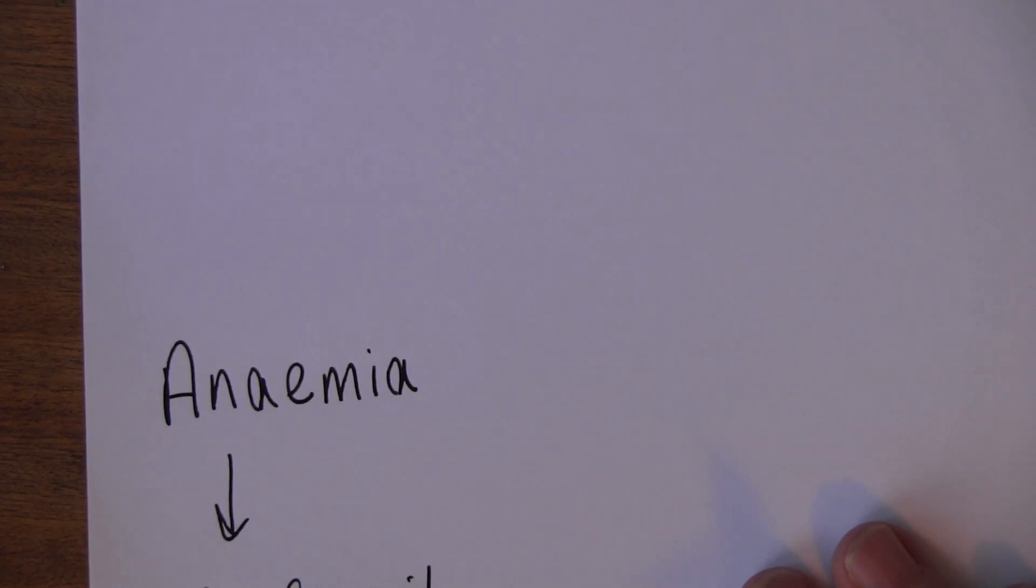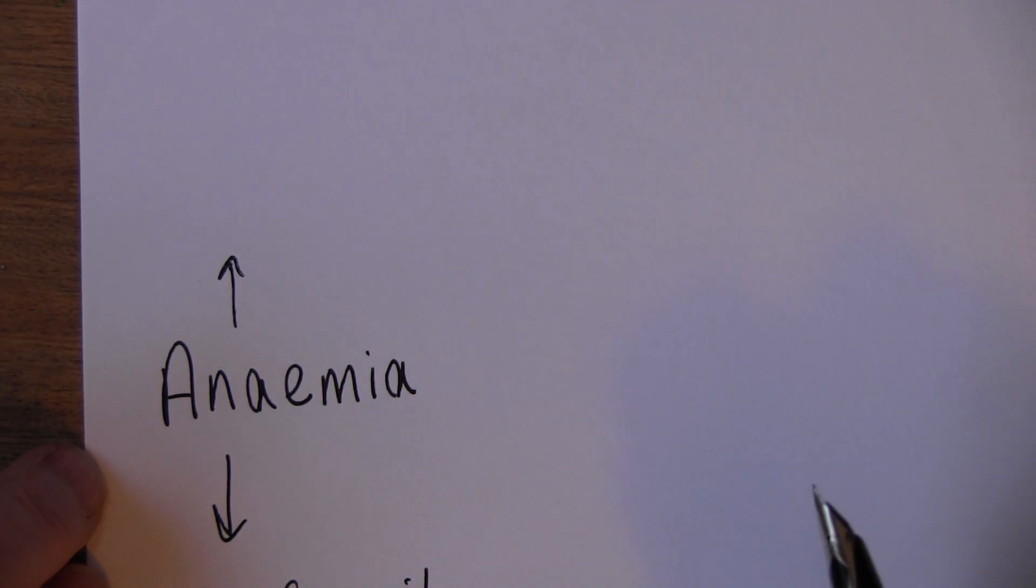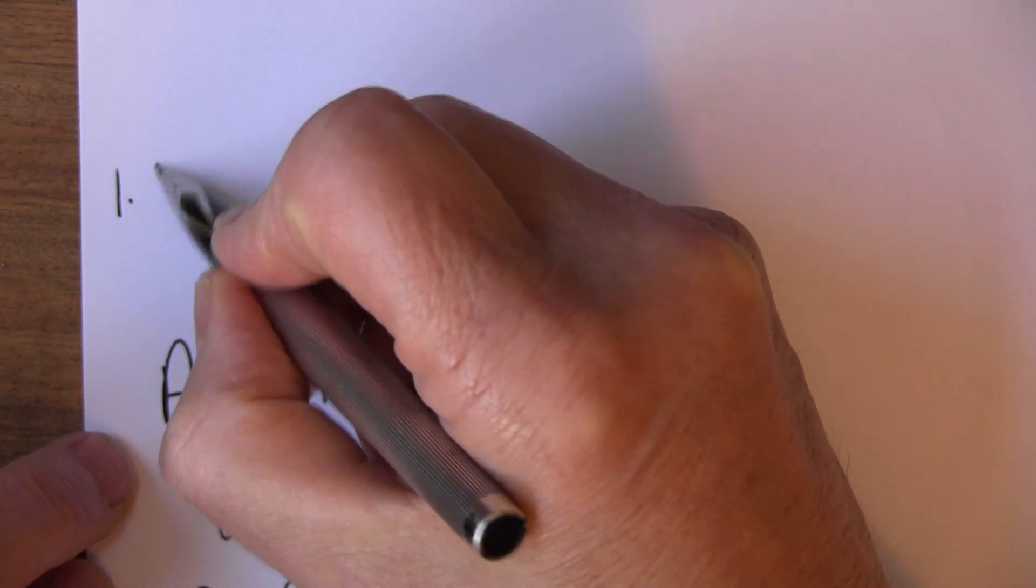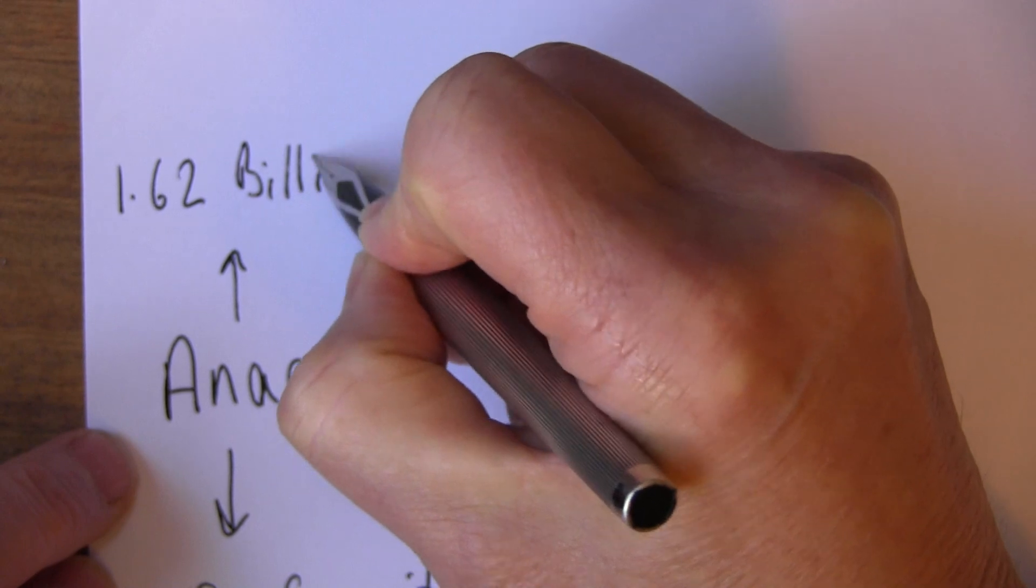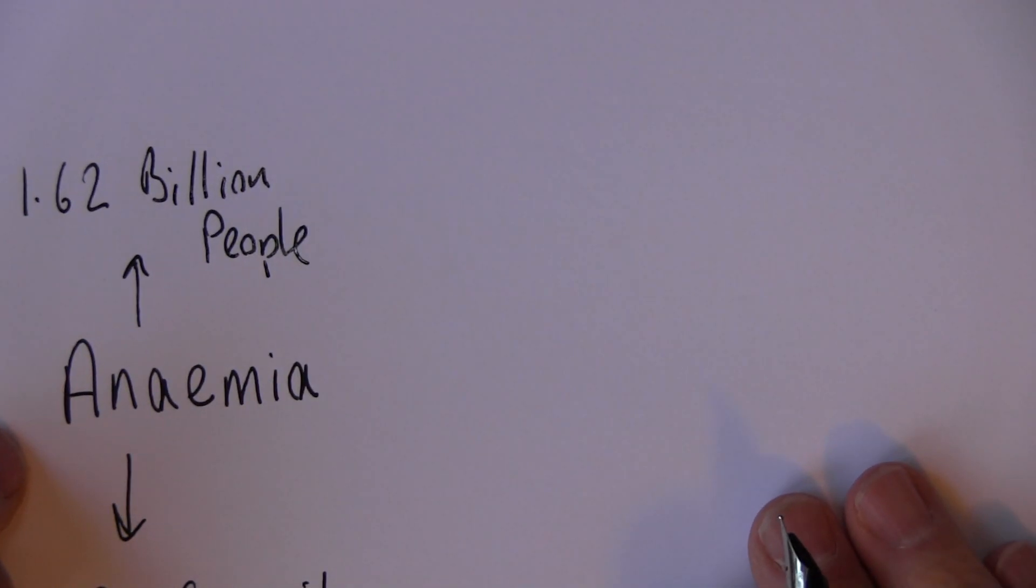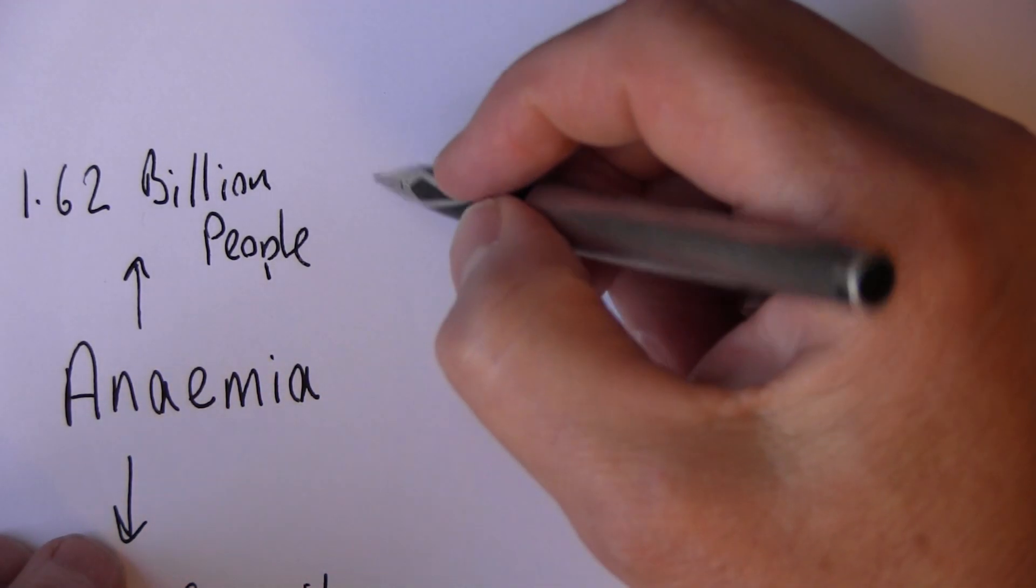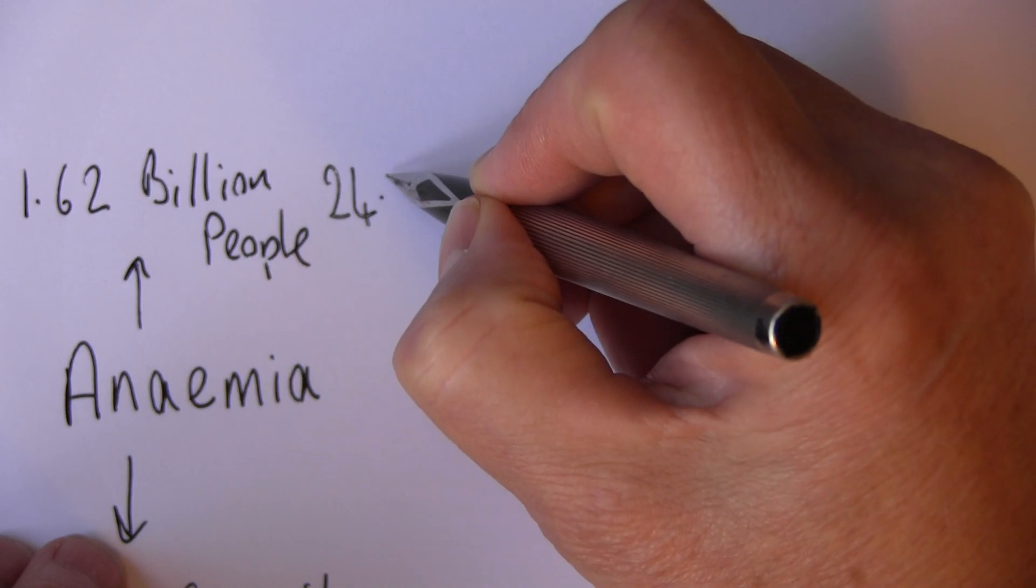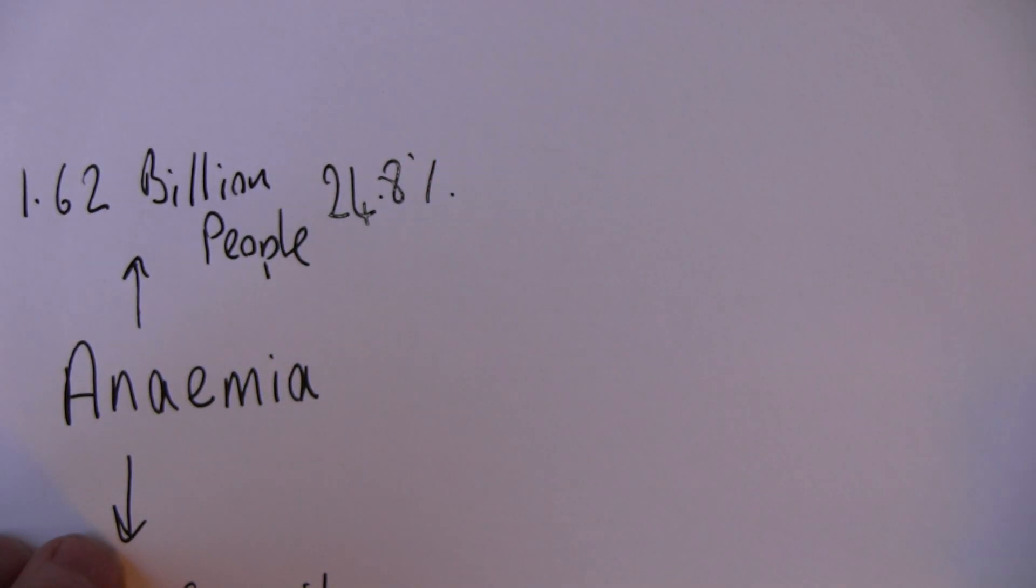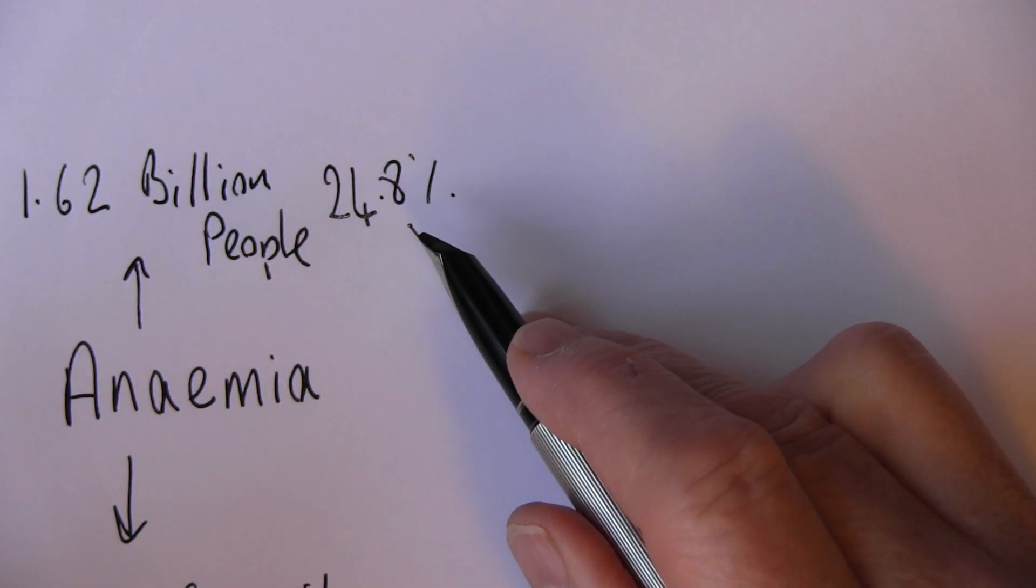Now why is it important for us to know about anemia? The WHO, the World Health Organization, and these figures are an indictment on humanity, but they are the latest WHO figures: 1.62 billion people suffer from anemia. This is remarkably common, and that works out at 24.8 percent of the world's population. Basically a quarter of the world's population are anemic.